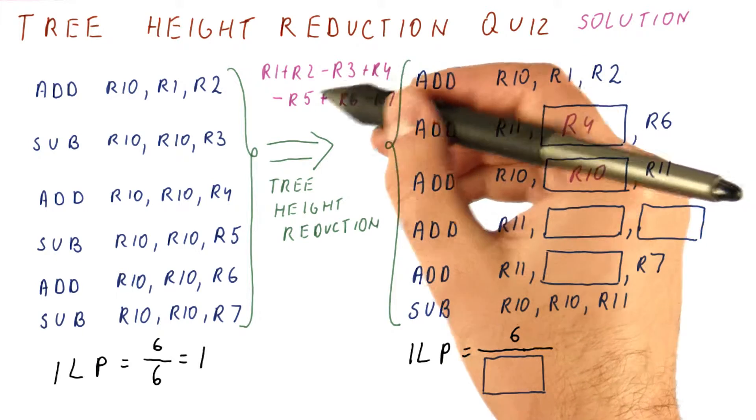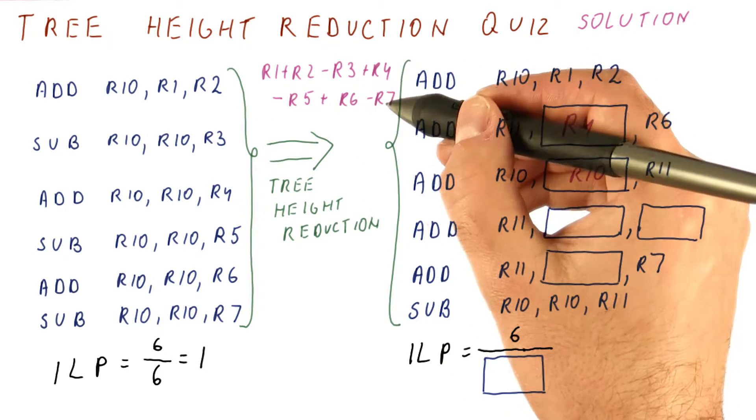Now we're going to subtract R3, R5, and R7 from it. If we do it one at a time, that's going to be slow.